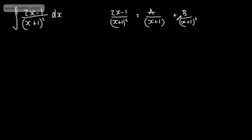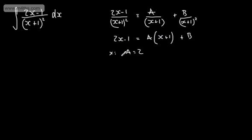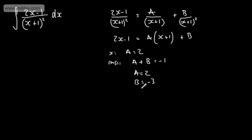We consider (x plus 1) and (x plus 1) squared. Multiplying through, we get 2x minus 1 equals a(x plus 1) plus b. Looking at terms in x, we see a equals 2. Looking at constants, a plus b equals minus 1, so b equals minus 3. Therefore a equals 2 and b equals minus 3.